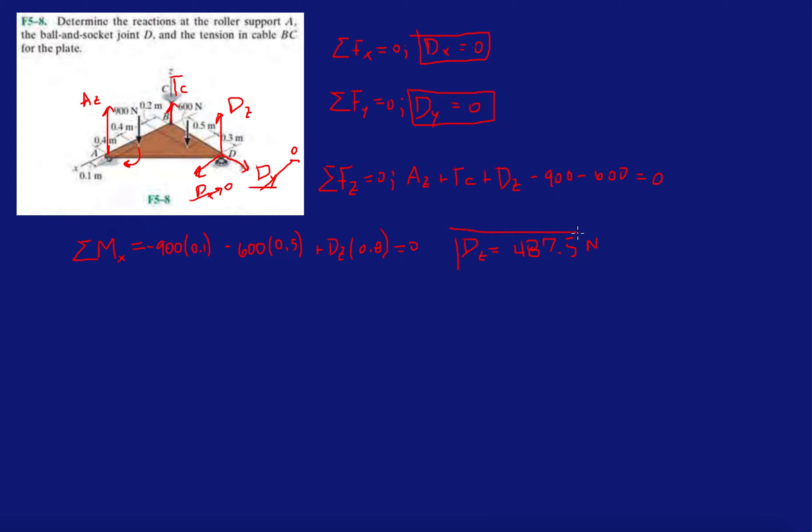We have at support D, we already found all the reaction forces: DX zero, DY zero, and DZ 487.5. Now let's look at one more moment equation about the Y direction, because we still can't do anything with these two. We can plug in DZ, but we'll have two unknowns and one equation still. So we need moments about Y direction.